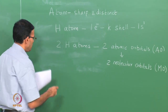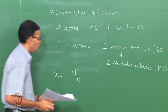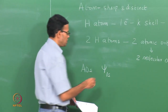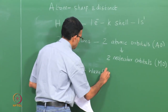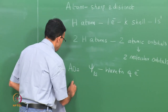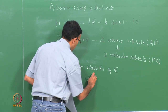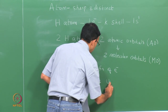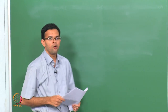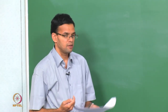Let us denote the atomic orbitals by the symbol ψ₁s, where 1s refers to the electron in the 1s shell. If you have 2 hydrogen atoms A and B, you have 2 atomic orbitals: ψ₁sA and ψ₁sB. To form molecular orbitals, these 2 wave functions need to be combined, and there are 2 ways of doing it.